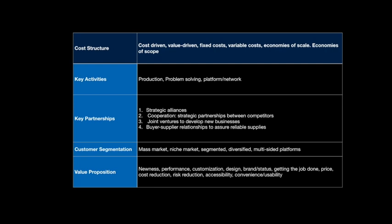Convenience and usability — making things more convenient or easier to use — can create substantial value. The iPod and iTunes are a great example. To summarize value propositions: some options work together and some work against each other. For example, brand and status often won't go together with low price. But a platform product can cover convenience and usability, accessibility, risk reduction, cost reduction, price, and design — all those different value propositions can exist within one product.